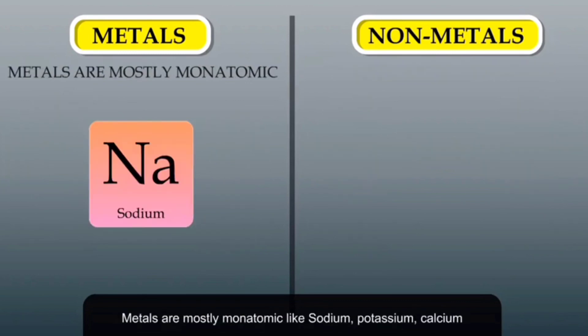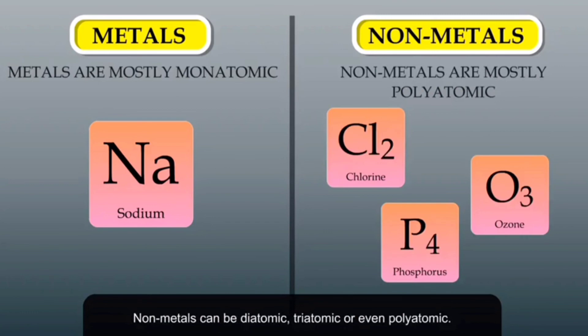Metals are mostly monoatomic, like sodium, potassium, and calcium. Non-metals can be diatomic, triatomic, or even polyatomic. For example, chlorine is diatomic and phosphorus is polyatomic.